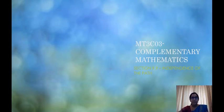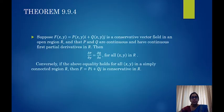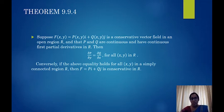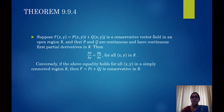Let's see what the statement says. Theorem 9.9.4 states that suppose the field F(x, y) = P(x, y)i + Q(x, y)j is a conservative vector field in an open region R, and that P and Q are continuous and have continuous first partial derivatives in R, then ∂P/∂y = ∂Q/∂x.